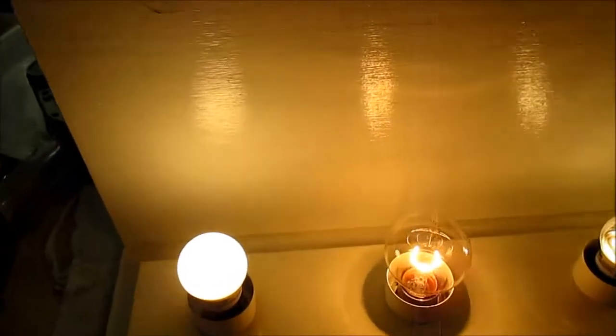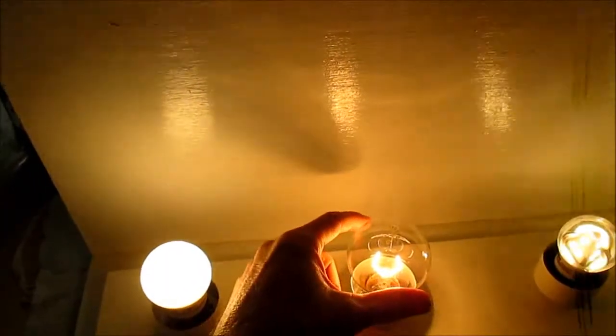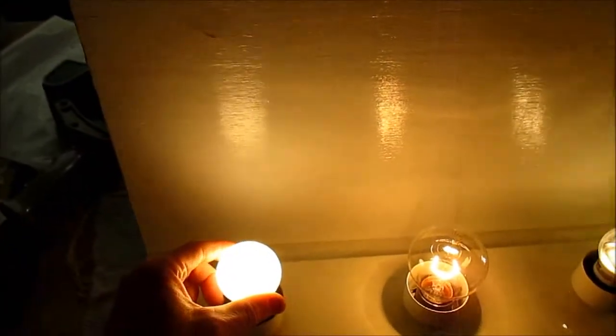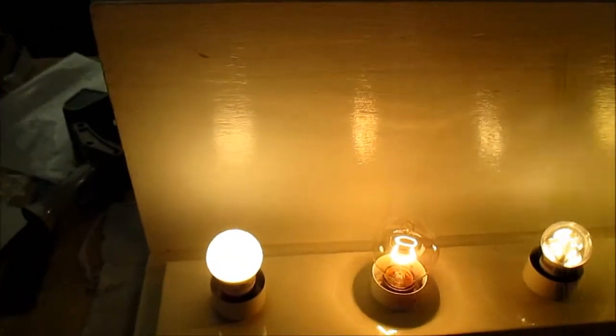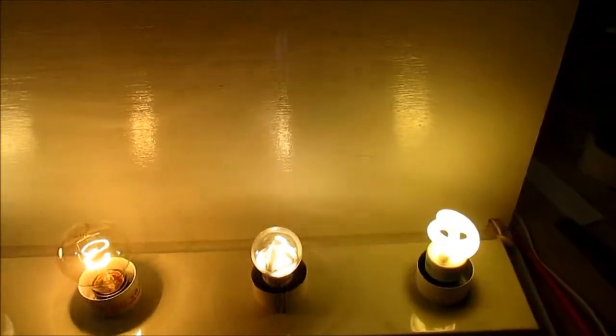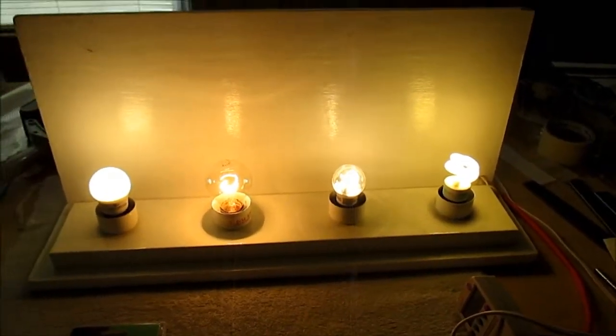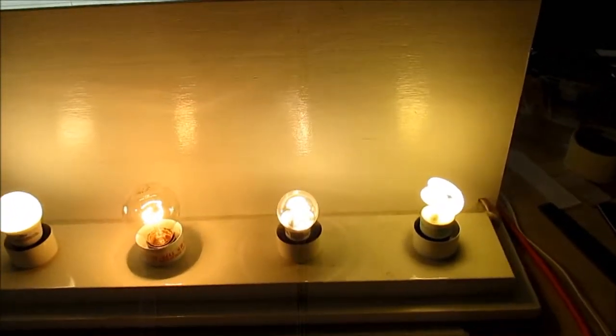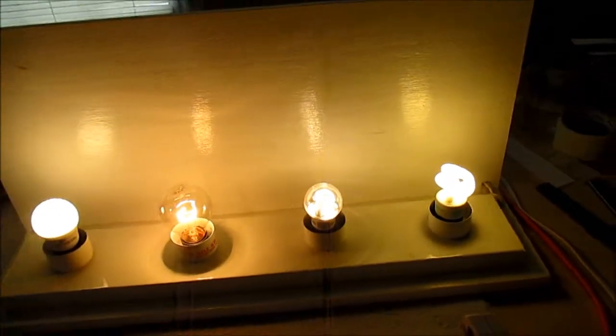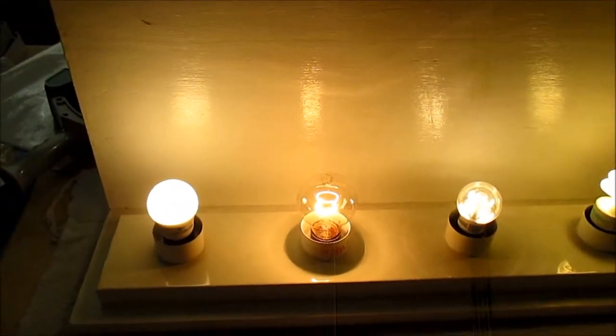I don't know if the camera shows it that well, but you can see the incandescent is quite a bit warmer. I'd say it's a pretty decent 3000 Kelvin bulb. And if the camera shows it, this is a 25 watt equivalent CFL, and it has that typical green cast that you see with CFLs. LEDs just do a much better job with light quality, I think.